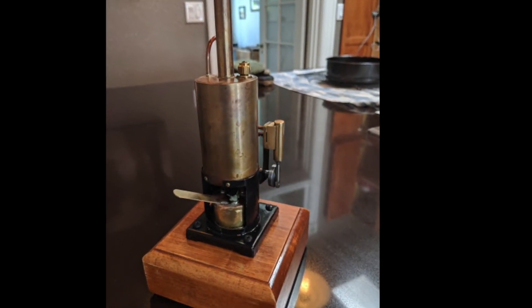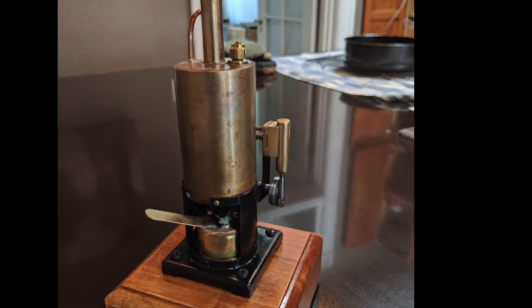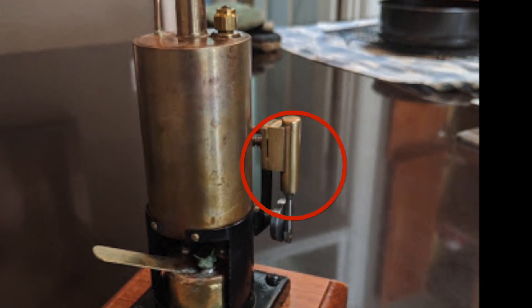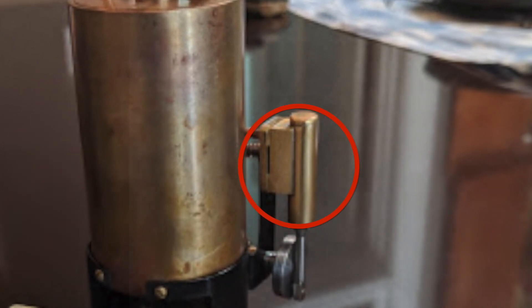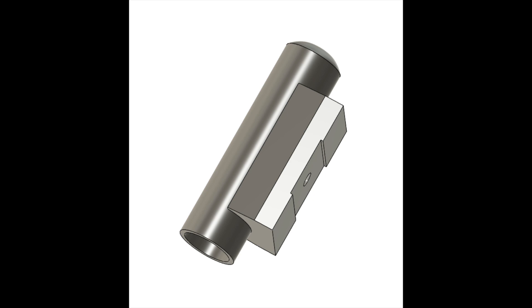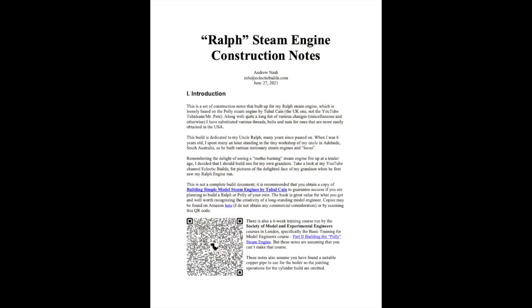This is a continuation in the video series on the Ralph steam engine. In this video we are machining the cylinder and cylinder block for the steam engine. The steam block provides a steam inlet and an exhaust port that drive the piston. Construction notes describing the part and the machining operations can be found at the Eclectic Builds website listed in the description.